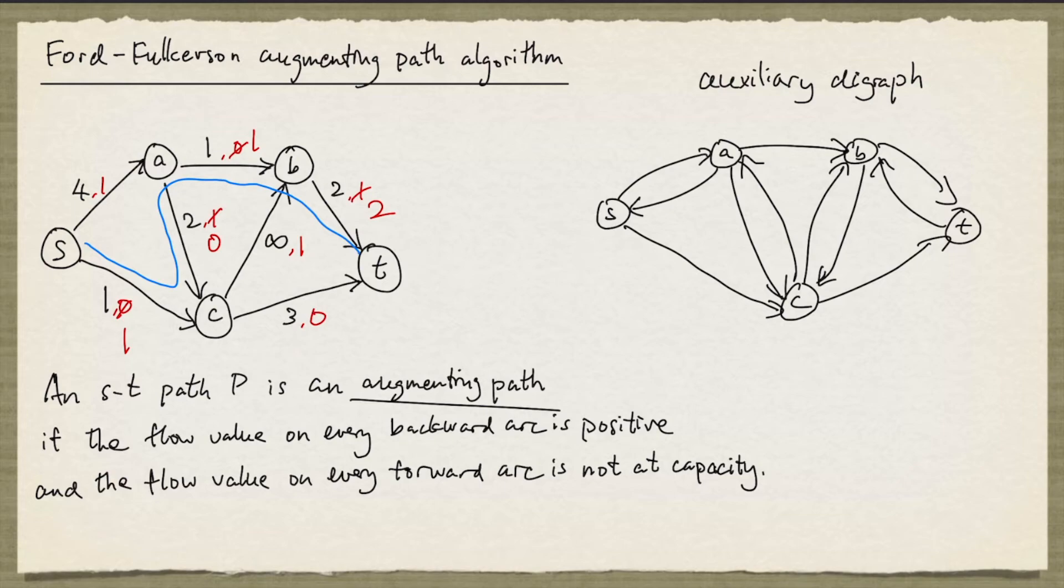If we now look for a directed s-t path in this auxiliary digraph, we will be able to identify an augmenting path in the original network. And clearly, this is a directed s-t path, and it corresponds to the augmenting path that we have found.